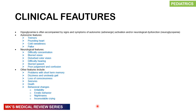Clinical features of hypoglycemia are often accompanied by signs and symptoms of autonomic or adrenergic activation and/or neurologic dysfunction — the so-called neuroglycopenia. Autonomic features include tremors, a pounding heart, cold sweat, and pallor. Neurological features include difficulty concentrating, blurred vision, disturbed color vision, difficulty hearing, slurred speech, poor judgment, and confusion. Other features include problems with short-term memory, dizziness and an unsteady gait, loss of consciousness, seizures, death in some cases, and behavioral changes such as irritability, erratic behavior, nightmares, and inconsolable crying especially in younger children who cannot talk.